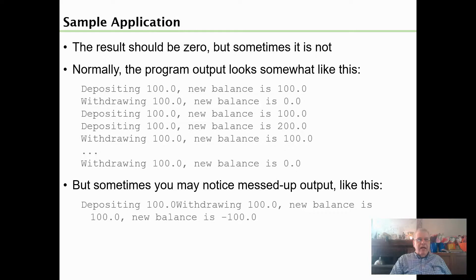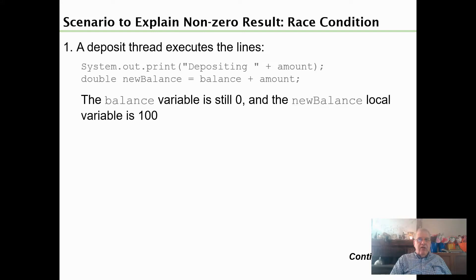Normally the top part of this slide shows what it's supposed to look like. You deposit a hundred dollars and the new balance is a hundred dollars. Withdraw a hundred dollars, the new balance is zero. But occasionally there'll be some incorrect output like this, and that's because the thread timed out in the middle.